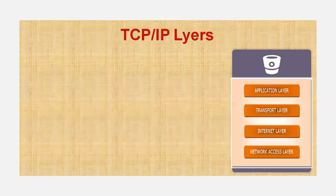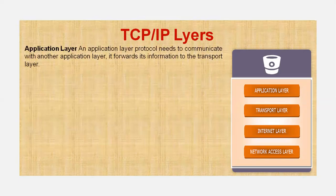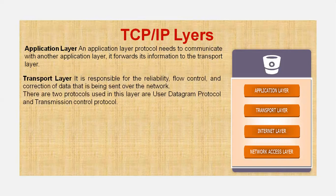Now let us see the TCP/IP layers. We know that TCP/IP has four layers. The first and topmost layer is the application layer. When one application layer protocol needs to communicate with another, it forwards the information to the transport layer. The transport layer is the second layer and is responsible for reliable flow control and correction of data being sent over the network. Two protocols are used in this layer: User Datagram Protocol (UDP) and Transmission Control Protocol (TCP).